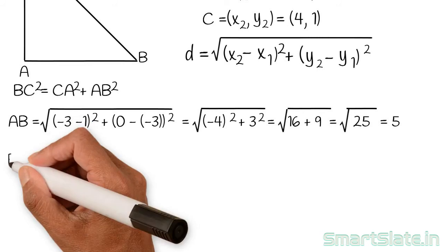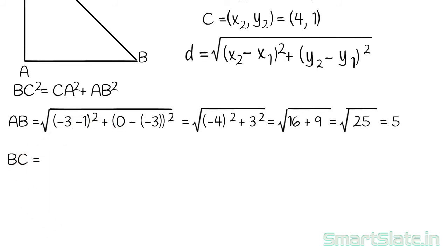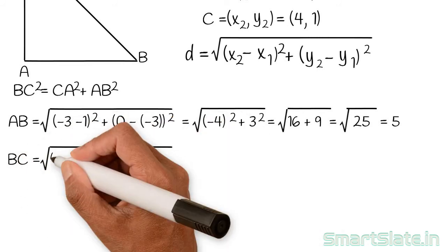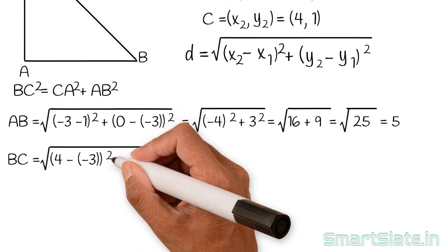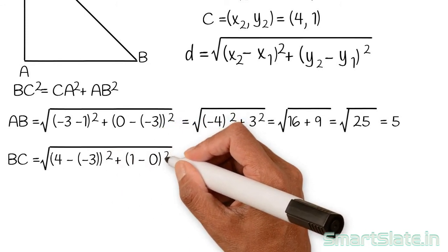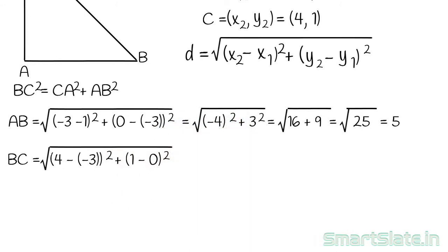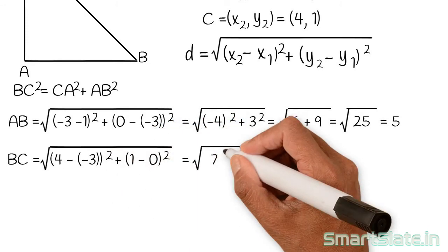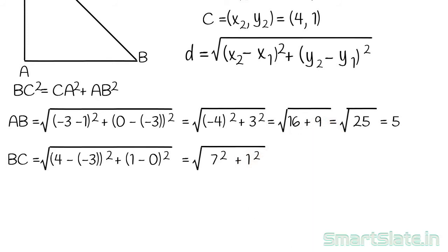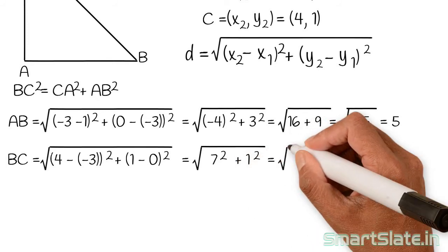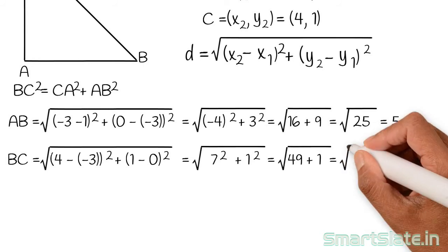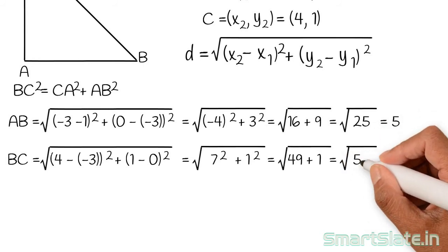Now let's calculate BC. It is square root of (4 minus -3) squared plus (1 minus 0) squared. That is square root of 7 squared plus 1 squared. 7 squared plus 1 squared is 49 plus 1, so it is square root of 50.